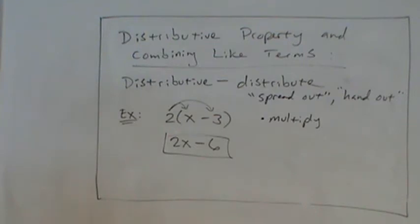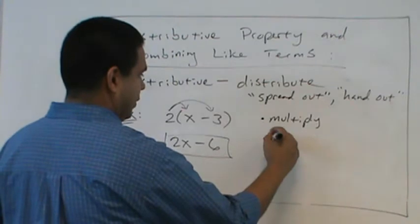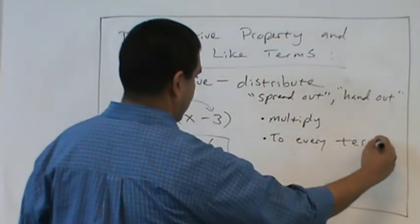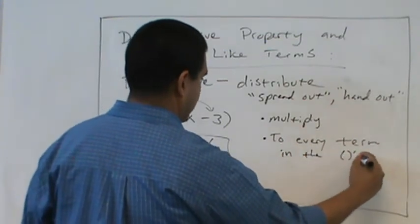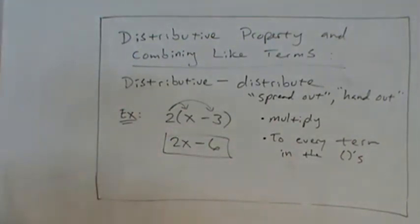And that's it. That's distributive property. So we multiply, and we multiply to every term in the parentheses. Every term in the parentheses. Let's do another example, where we have to distribute and then combine like terms.